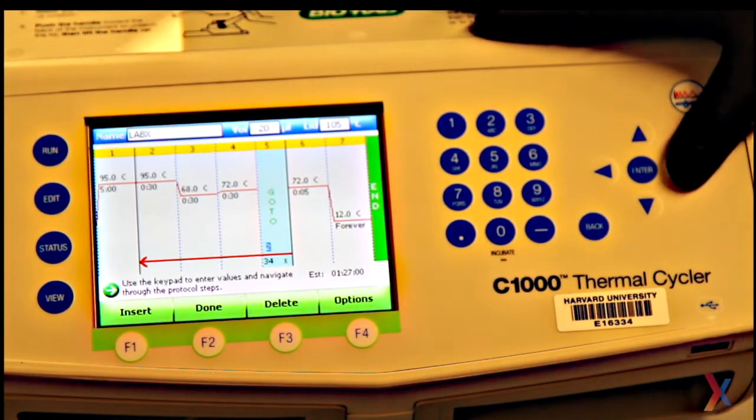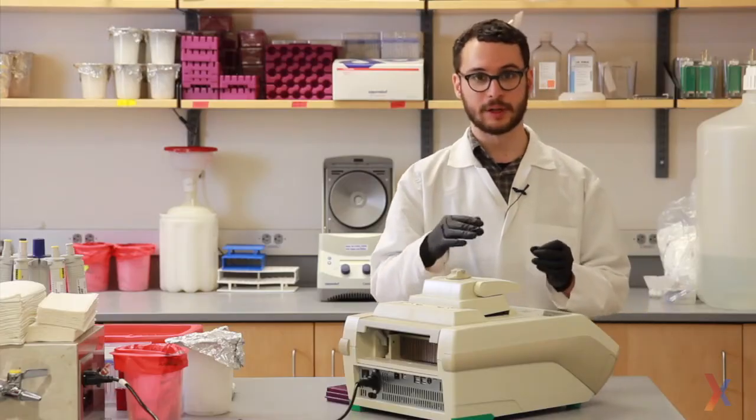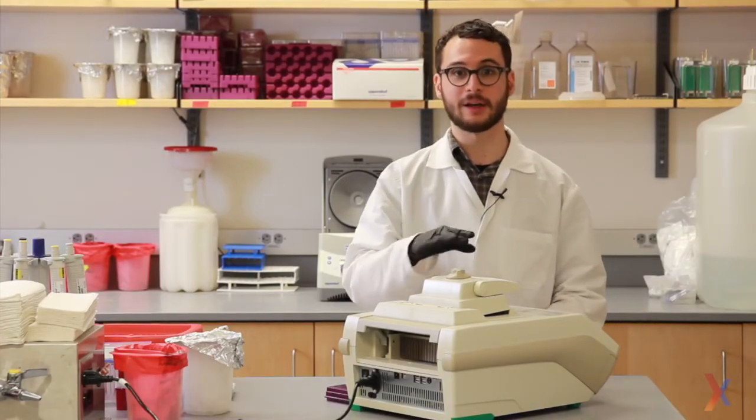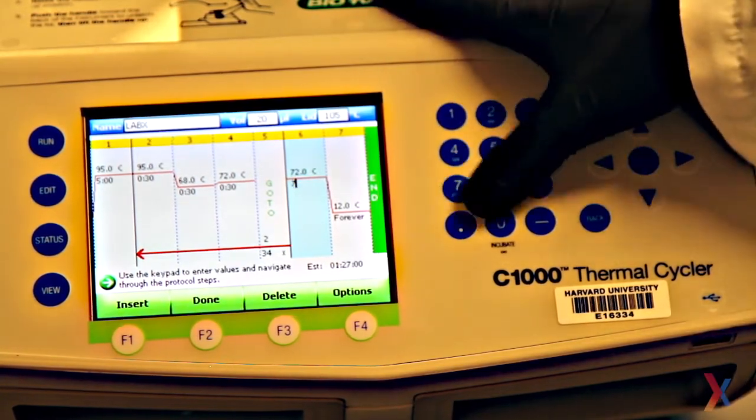When the cycle is over, I'll do a final extension step so that DNA polymerase has an opportunity to finish up any copies that weren't completed. So I want this at 72 Celsius for seven minutes.